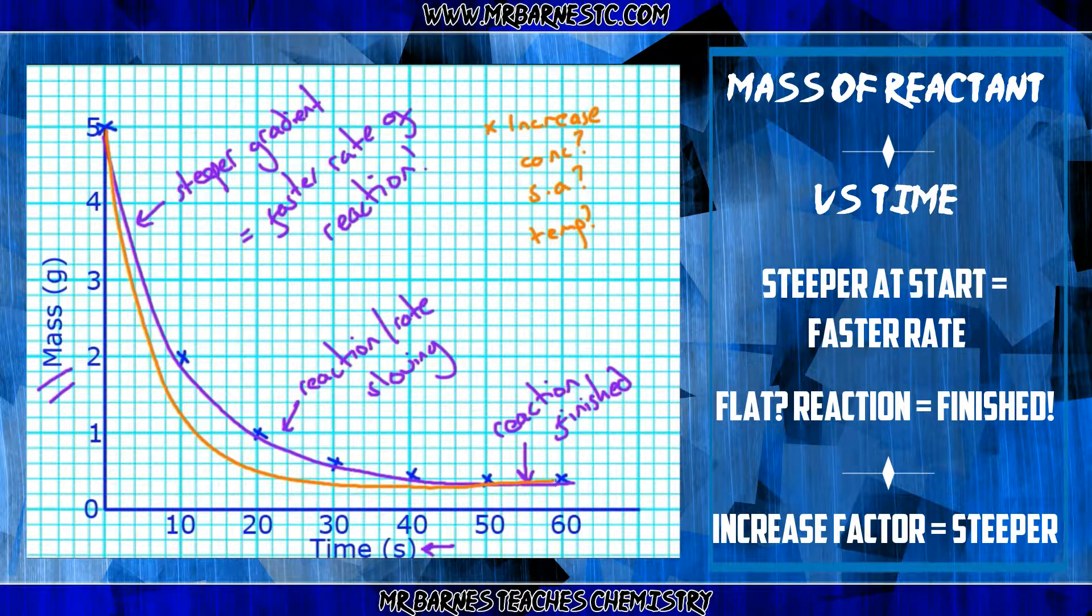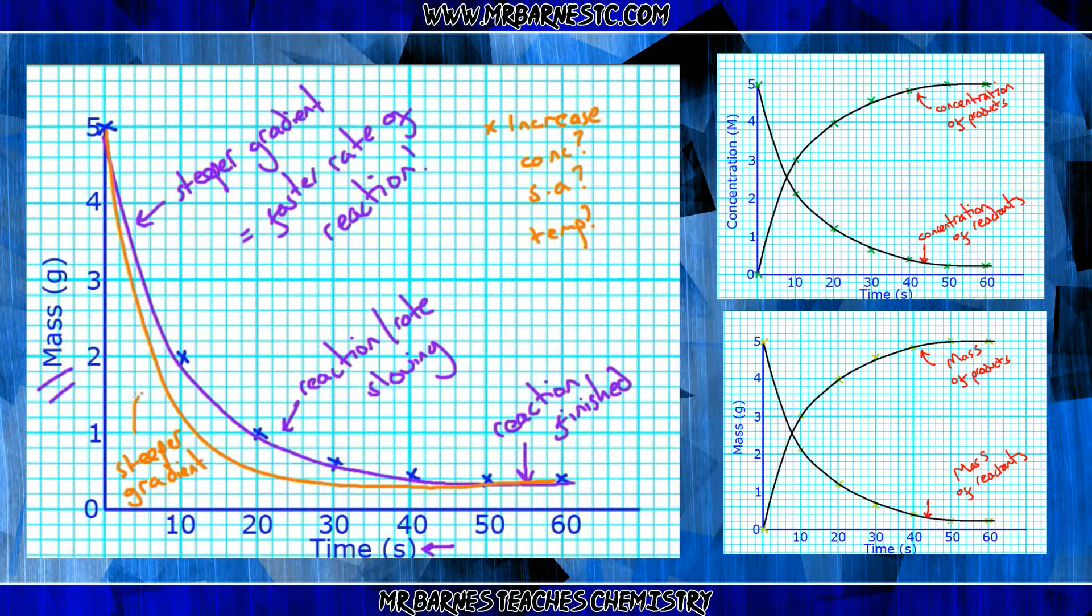And this is exactly the same for concentration graphs as well. All I need to do is change the axis on the left from mass to concentration. The concentration of the products will increase, and the concentration of the reactants will decrease, as you can see from my little graphs on the right-hand side.